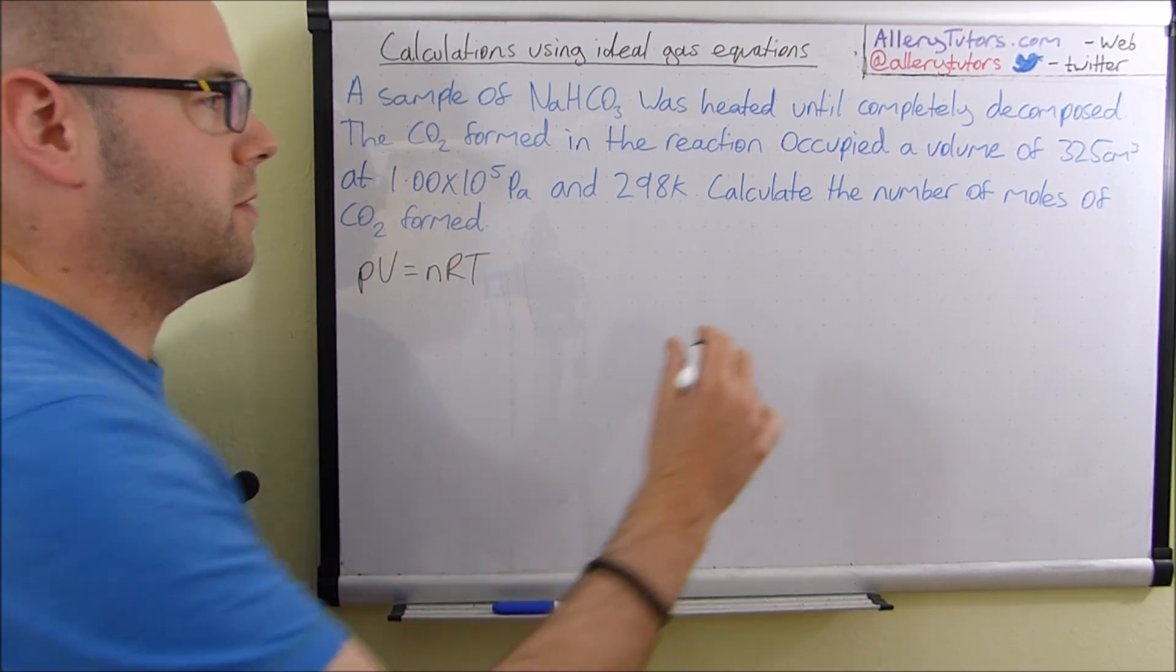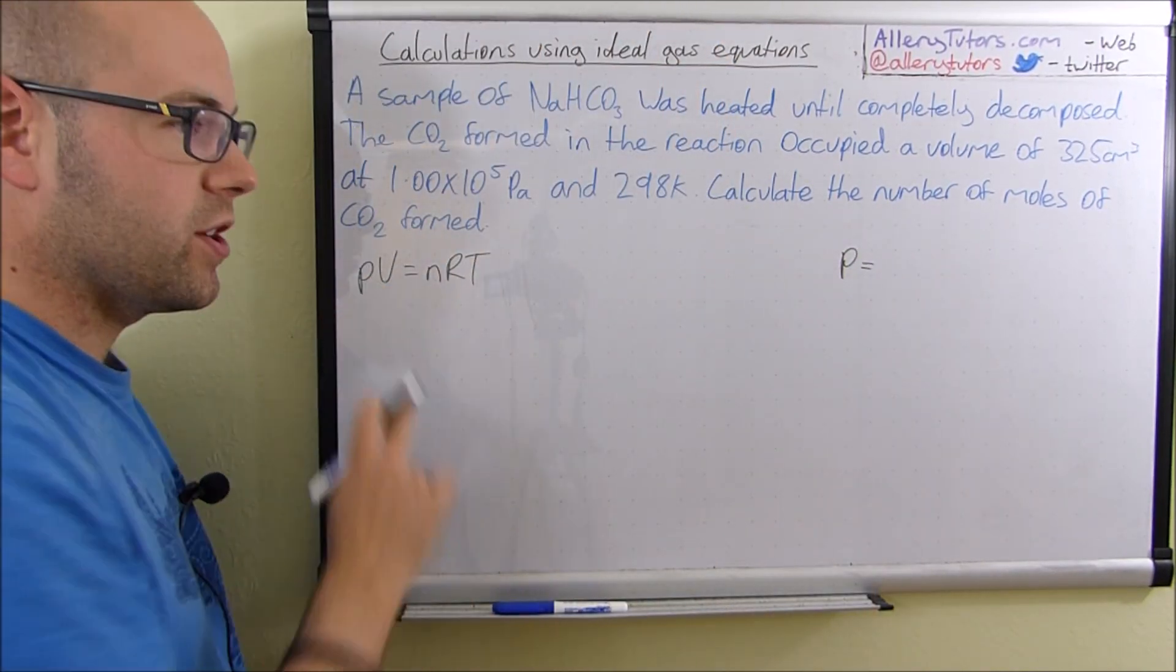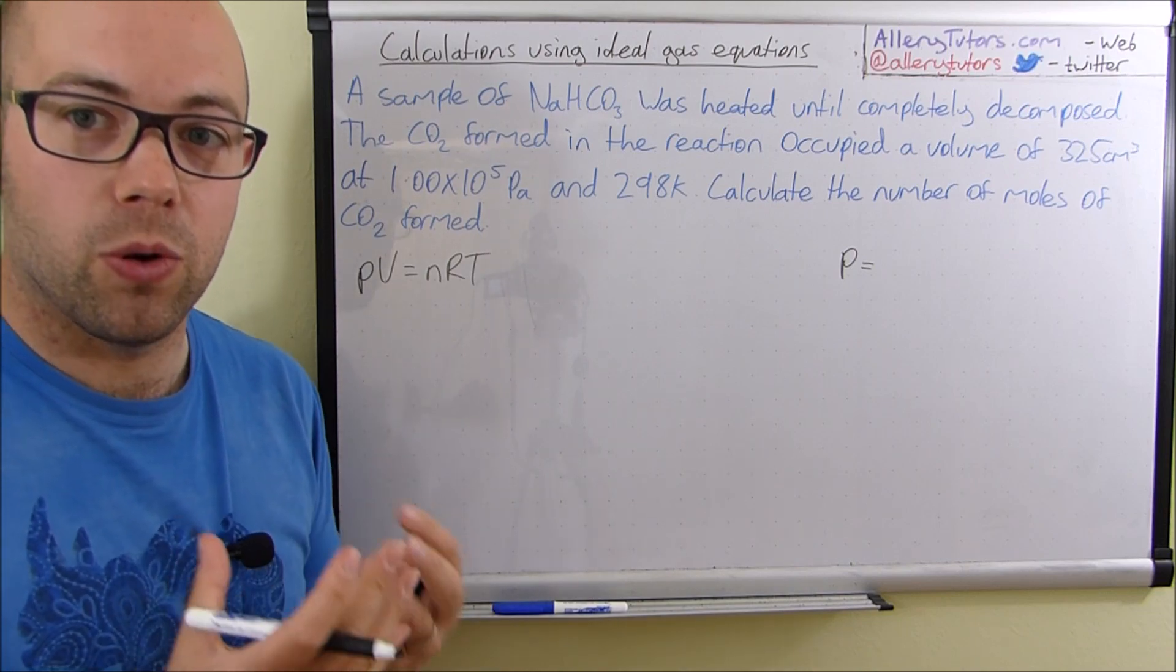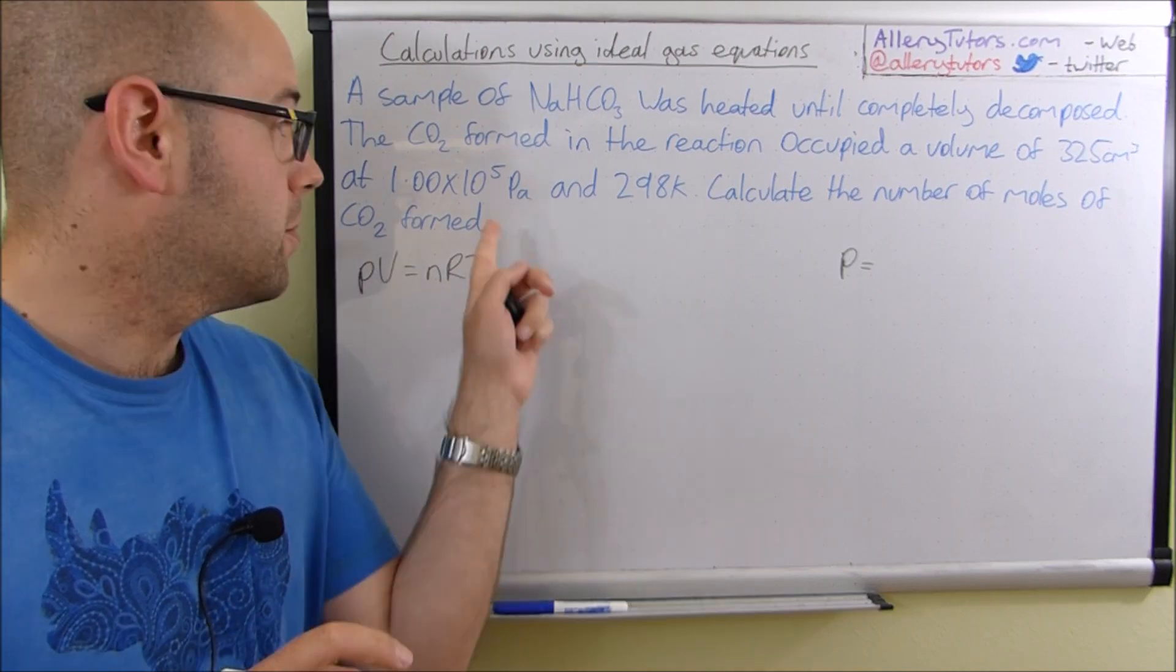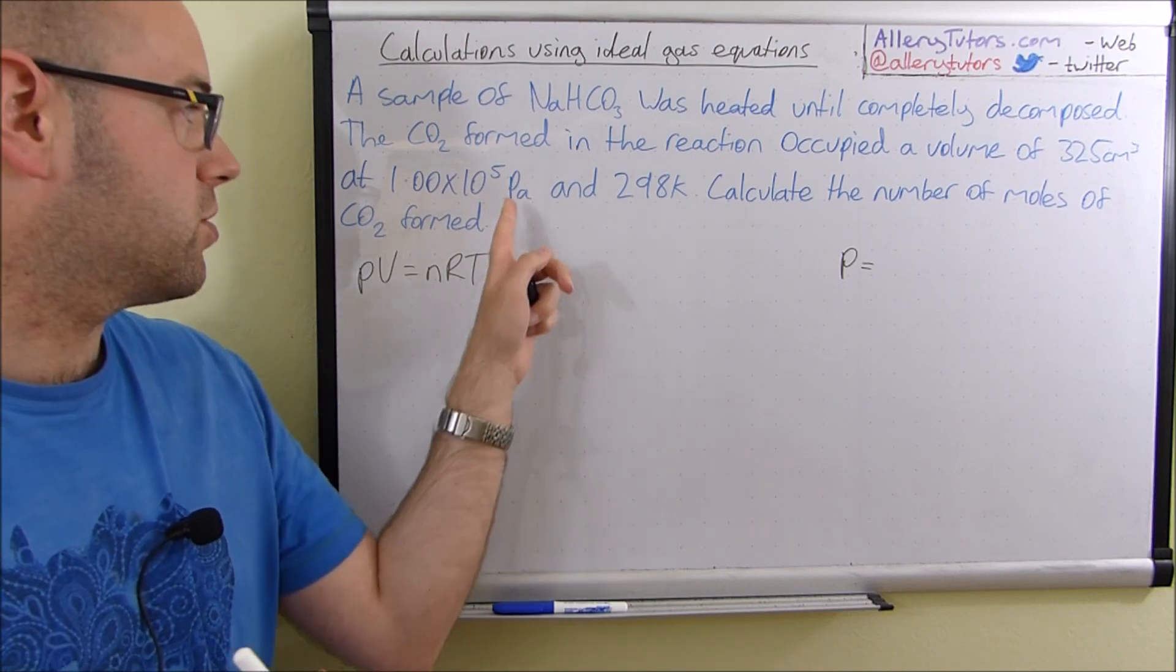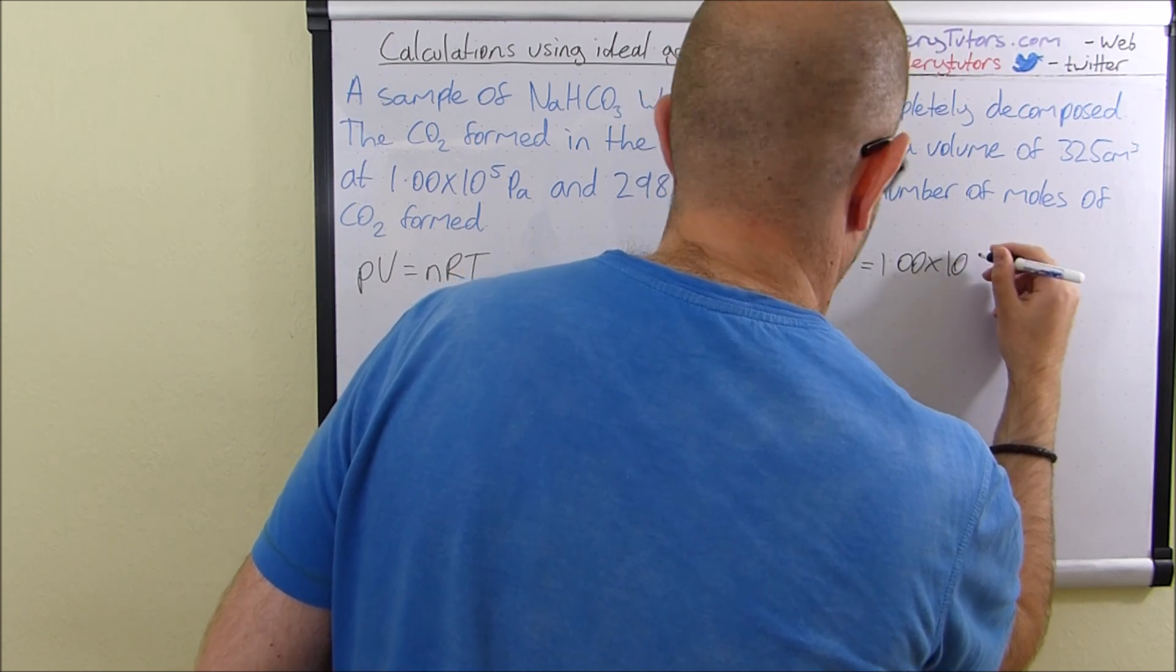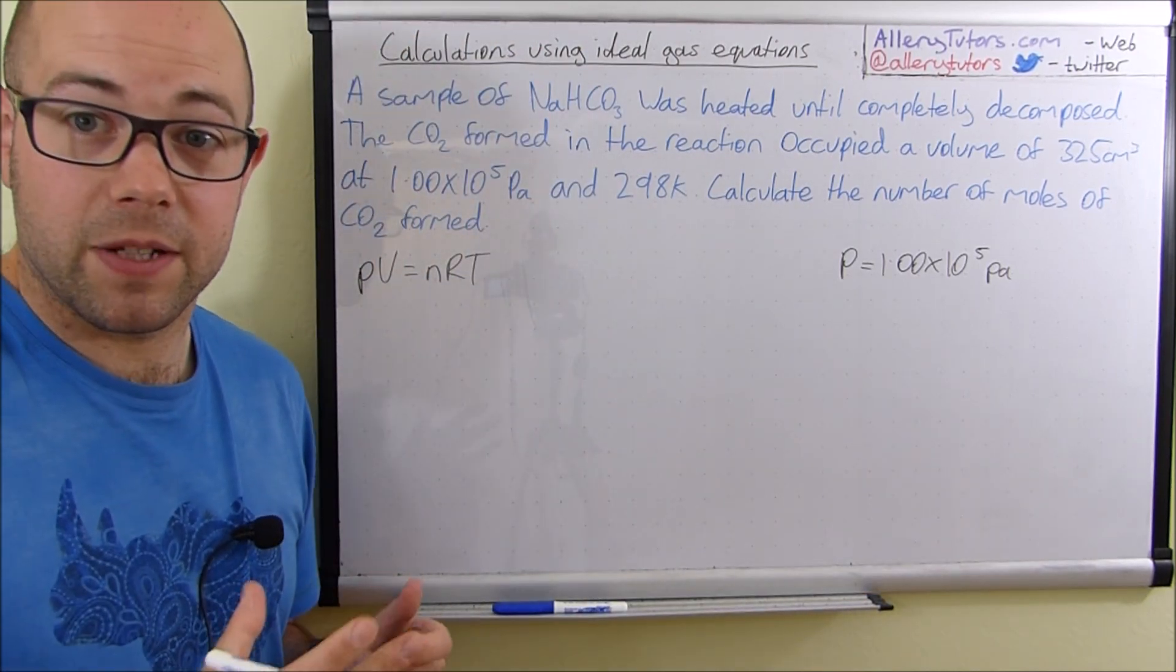So the first thing, I'm going to write it over here, we'll put P. So this was pressure. Now the pressure, as you can see on here, is 1 times 10 to the 5 pascals. Pressure in the ideal gas equation is always measured in pascals. So in this case, we don't have to change anything. But if this was in kilopascals, then you'd need to convert to pascals. So it's very important. Make sure it's in pascals. In this case, it is. So that's the pressure bit done, that's fine.